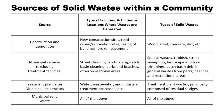Construction and demolition waste types include wood, steel, concrete, dirt, and so on. For municipal services, waste comes from street cleaning, landscaping, catch basin cleaning, parks and beaches, and other recreational areas. The types of solid waste from municipal services are special waste, rubbish, street sweepings, landscape waste, catch basin debris, and general waste from parks, beaches, and recreational areas.